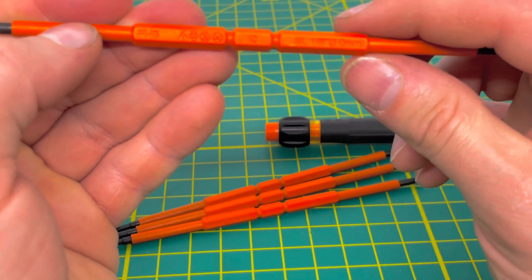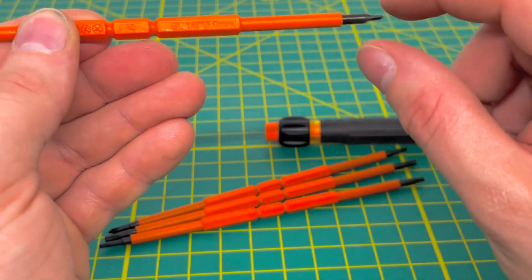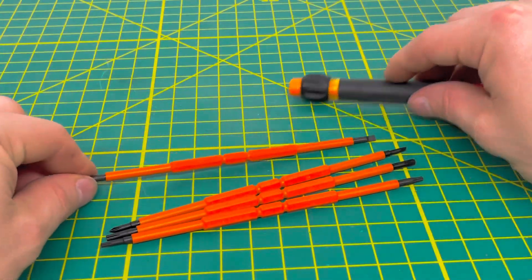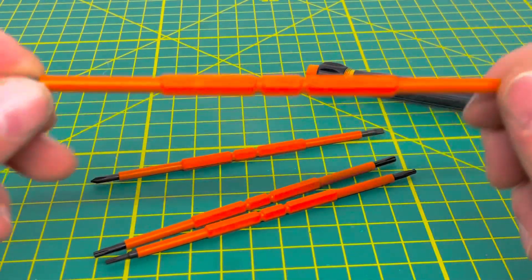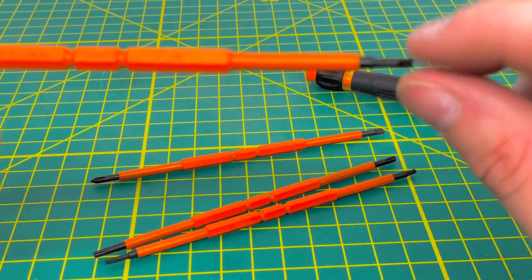If you flip the bit over you can see your sizes. This is your Phillips number 0 and 1/8 inch slotted. This one is your double zero Phillips and 3/32 flathead.